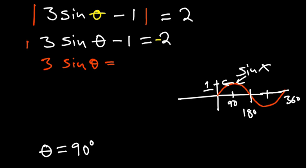So minus two plus one is going to give us minus one. You can divide both sides by three. Sine theta becomes equal to negative one over three.